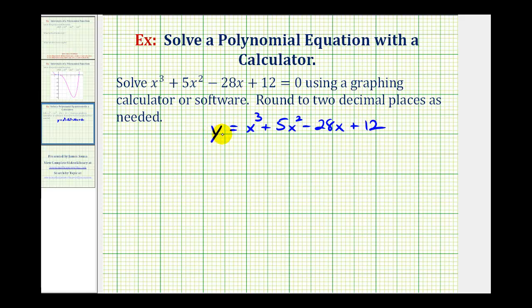Now remember, when we wanted to find the x-intercepts of a graph, we set y equal to zero and solve for x. Well, if we set y equal to zero, this becomes the original equation that we're trying to solve.